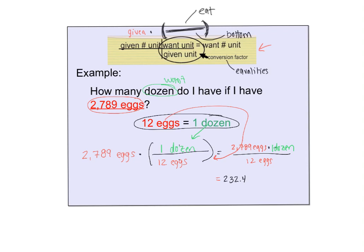Now let's look at units. On the top of my equation, I have this unit eggs, and on the bottom, so those cancel. The only unit I have left is dozen. So I'm left with 232.4 dozen as my answer.